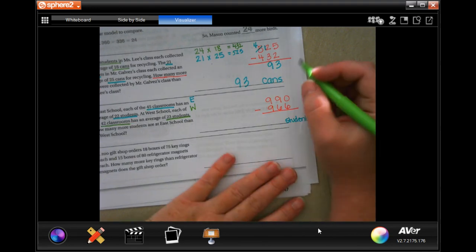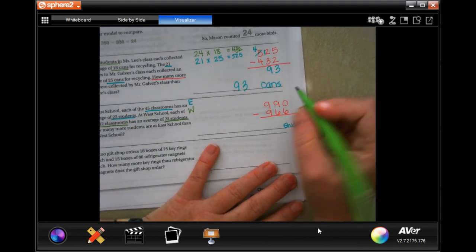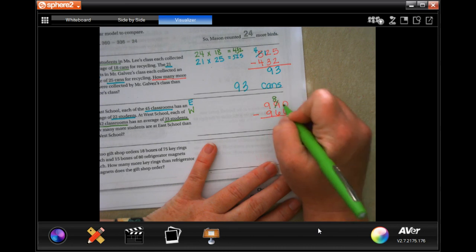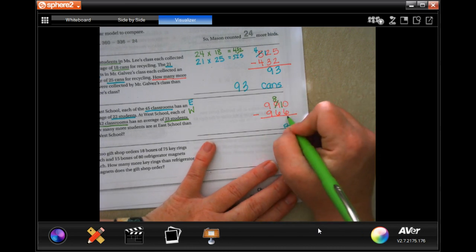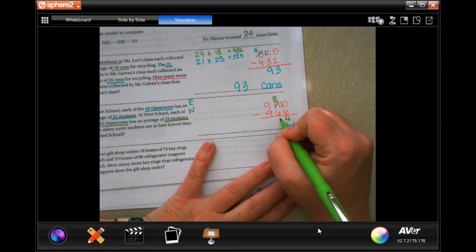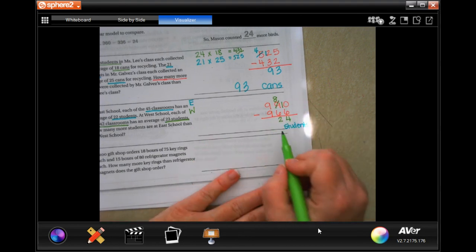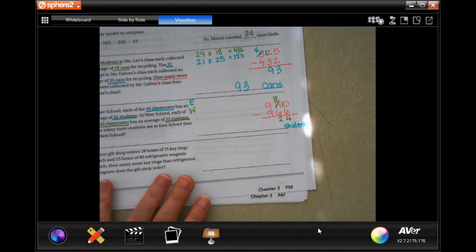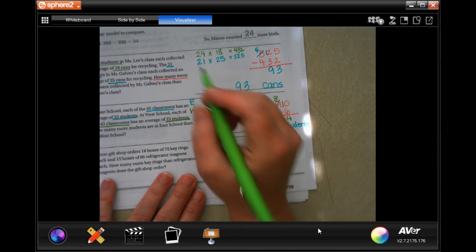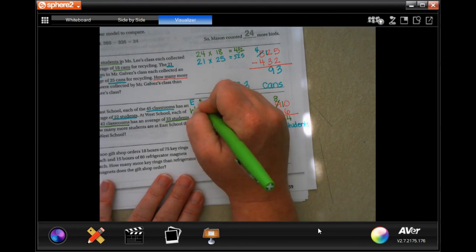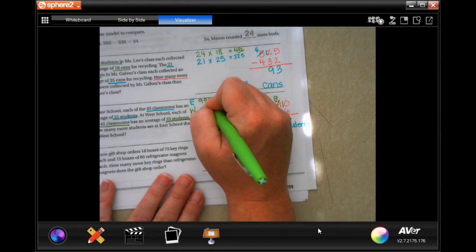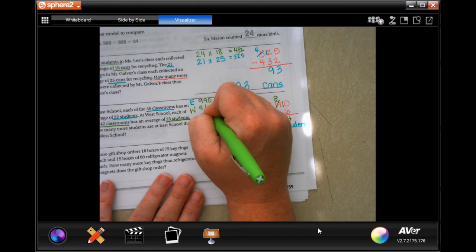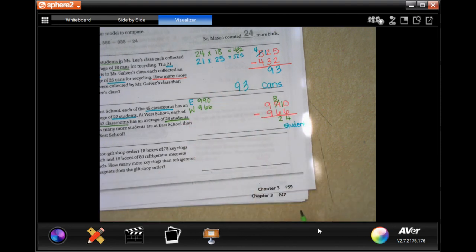So 0 cannot take away 6, so I'm going to borrow 1, making that a 10. 10 minus 6 is 4. 8 minus 6 is 2, and 9 minus 9 is nothing, so 24 students. Done. Write in, but east had 990, and west had 966, and that way you guys know where we got our numbers.